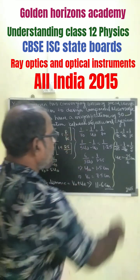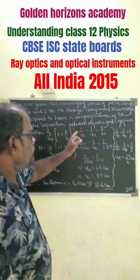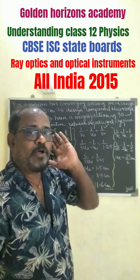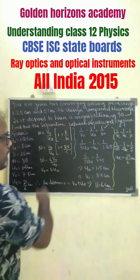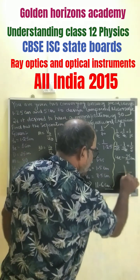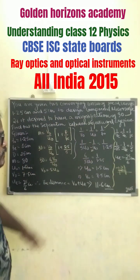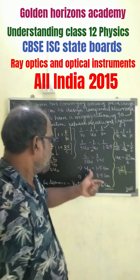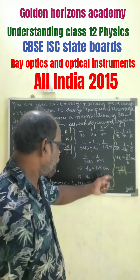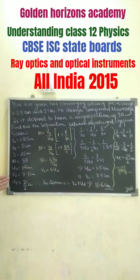We know that the objective focal length formula is 1/V₀ minus 1/U₀. Since we are taking M₀, it is negative because the object is on the opposite side of a converging lens. So we are taking minus here, and finally we get U₀ equals 1.5 cm and V₀ equals 7.5 cm, as already written.